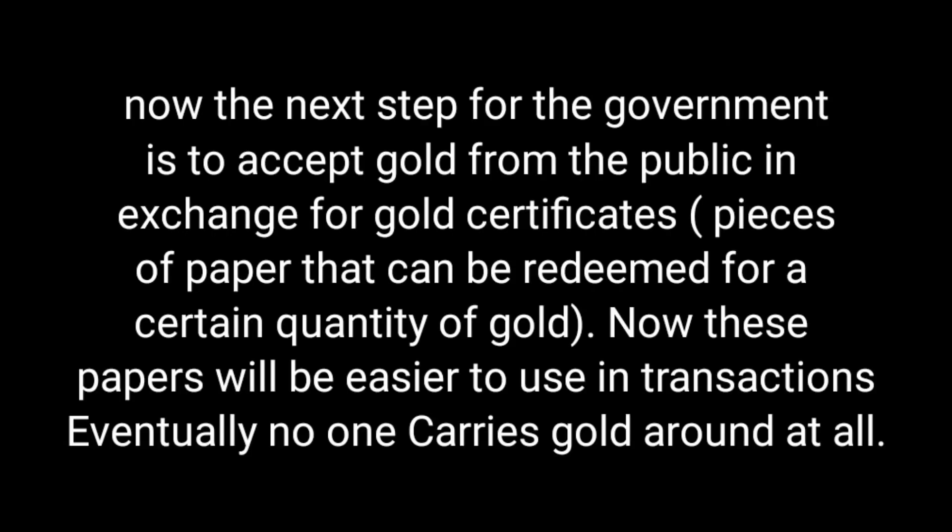Now suppose transactions are quite large—for example, someone wants to buy a house or large land. Don't you think it will require a lot of bags of gold coins? So people approached the government saying if we have to do very large transactions, we face difficulties carrying so many gold coins. The government said: give us your gold coins and we will give you paper receipts or certificates in exchange. The next step for the government is to accept gold from the public in exchange for gold certificates—pieces of paper that can be redeemed for a certain quantity of gold. These papers became easier to use in transactions. Eventually, no one carries gold around at all. That's how fiat money evolved.